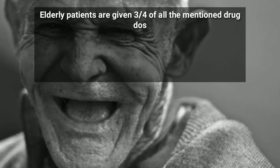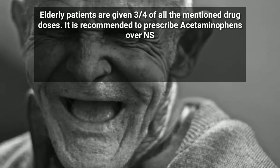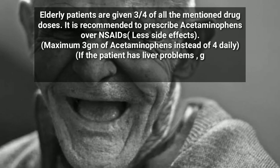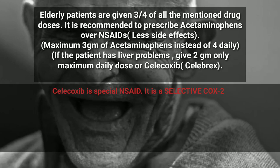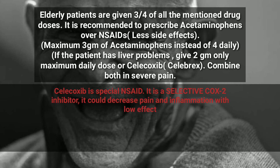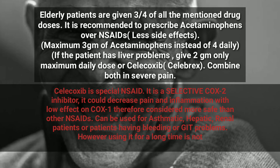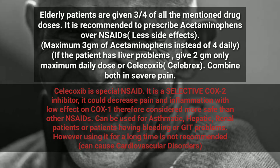Elderly patients over 55 years old are recommended to be given three-quarters of the standard dose because they have lower body metabolism and absorption. NSAIDs could cause blood problems in the elderly, so Panadol or acetaminophen is better used. Elderly patients should receive a maximum of 3 grams of acetaminophen per day. If they have hepatic problems or are alcohol abusers, the lowest effective dose of NSAIDs should be used.